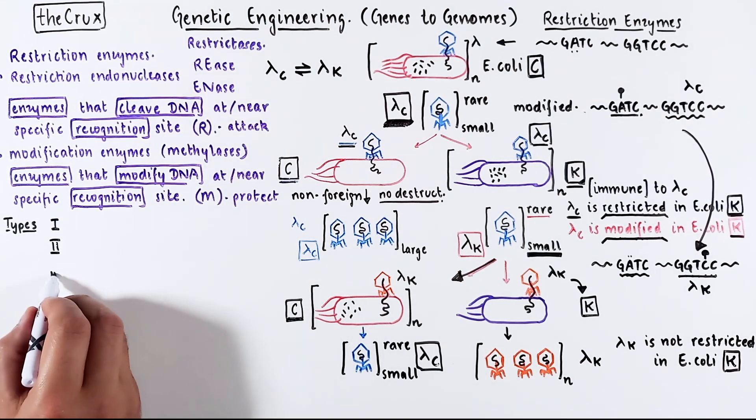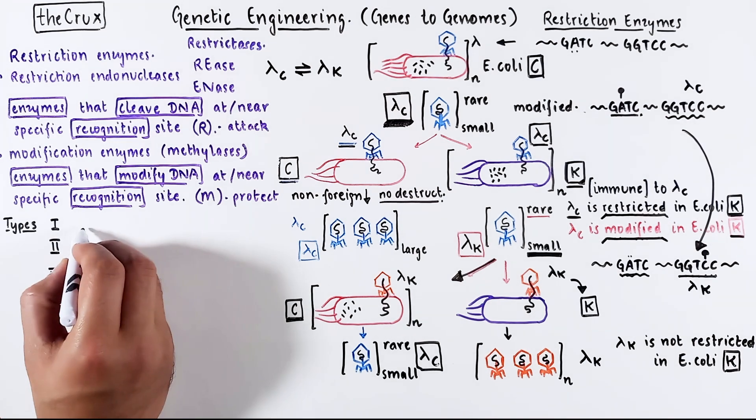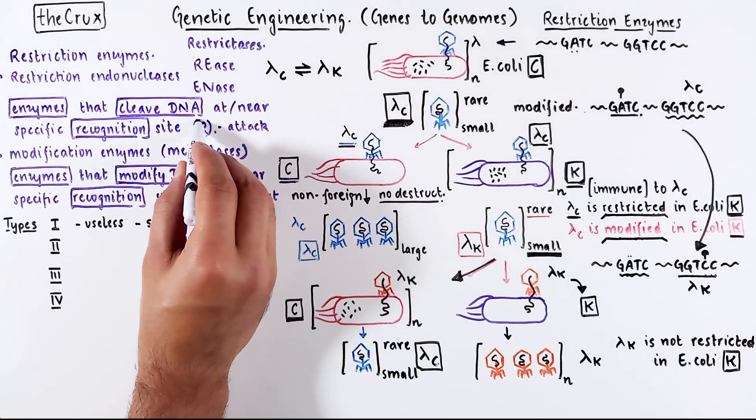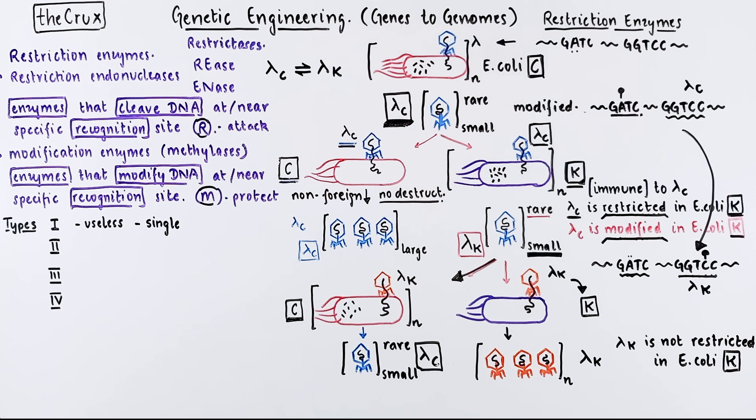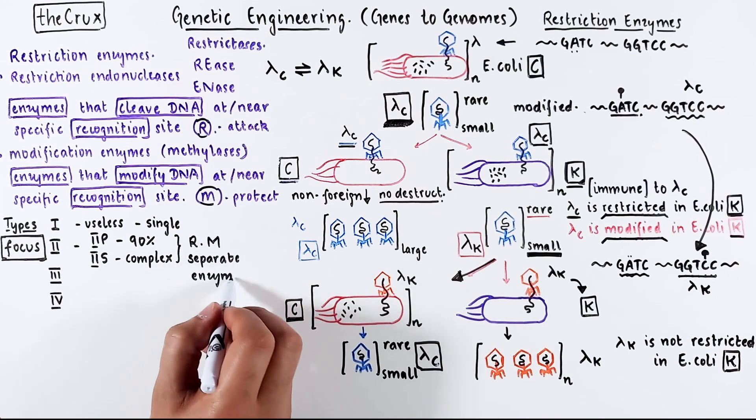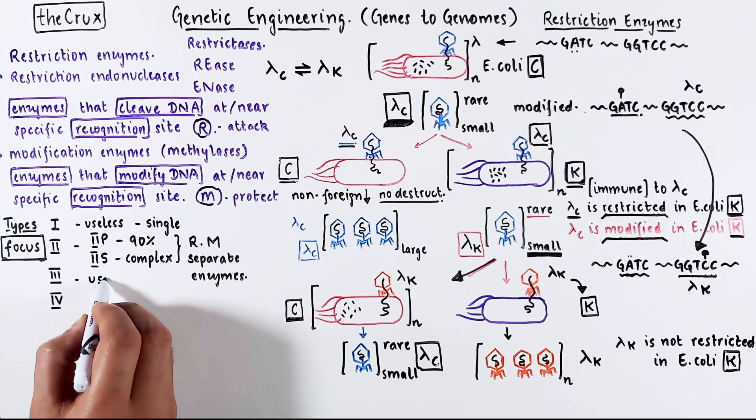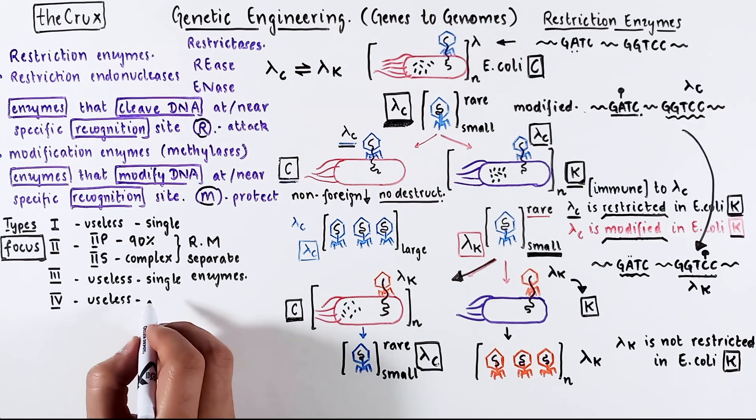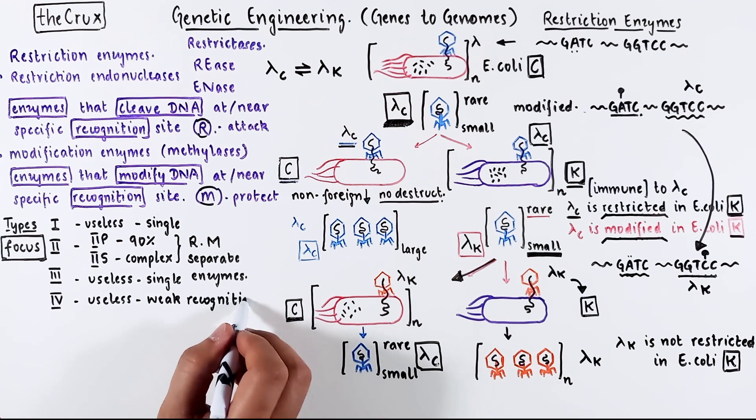There are at least four major types of restriction enzymes. The first type is absolutely useless. This is primarily because you have a single enzyme that carries out both the R and M function. The type 2 system has further subcategories like 2P and 2S, and this will be the primary focus of this series. Almost all molecular cloning relies on the 2P system. The 2S has specific use cases, they're a bit more complex. The good thing is that type 2 systems have two separate R and M enzymes. Type 3 enzymes are again useless, because both functions are built into one single enzyme. Type 4 have separate R and M enzymes, but they're useless because they have quite weak recognition.